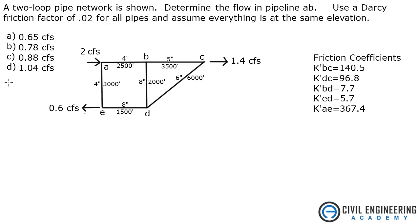The first thing I'm going to do is turn to the Civil Engineering Reference Manual. Chapter 17 goes over pipe networks. Specifically, we're going to use the Hardy Cross method, and Section 31 goes over that. There are some equations there, and it goes over a detailed explanation of the steps to take.